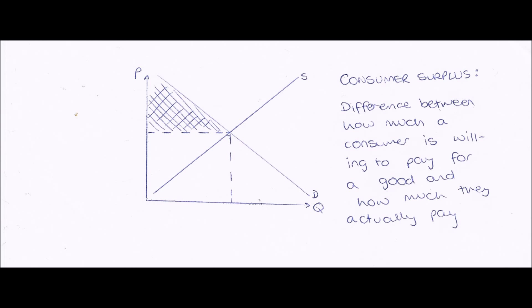We can show this diagrammatically as shown here. Our consumer surplus is shown by the shaded area, and this is because it represents the area between the top of the demand curve and the equilibrium price.